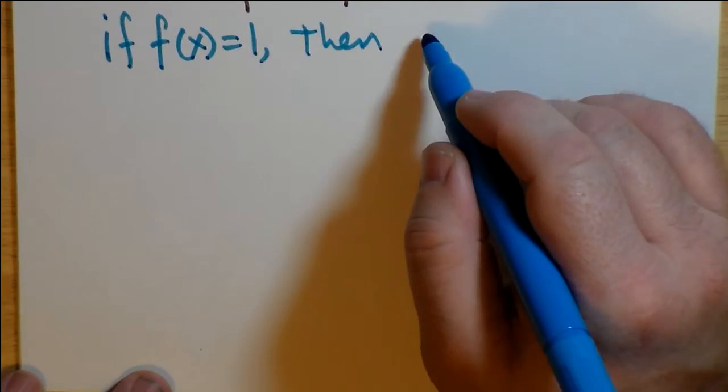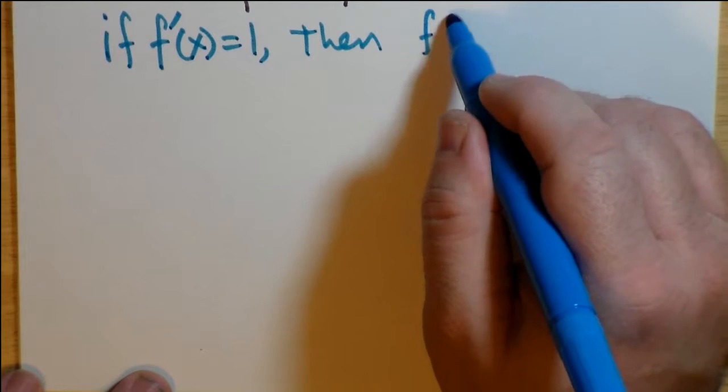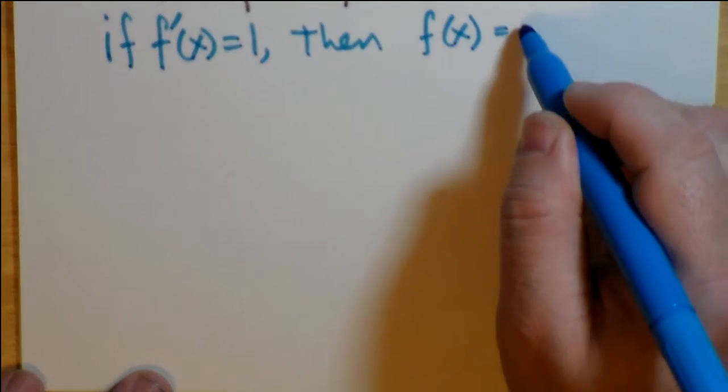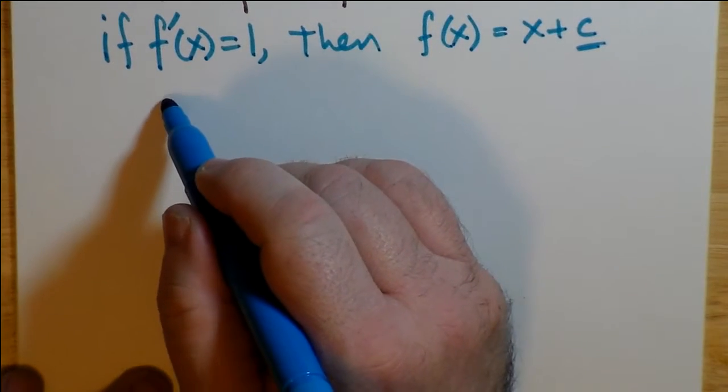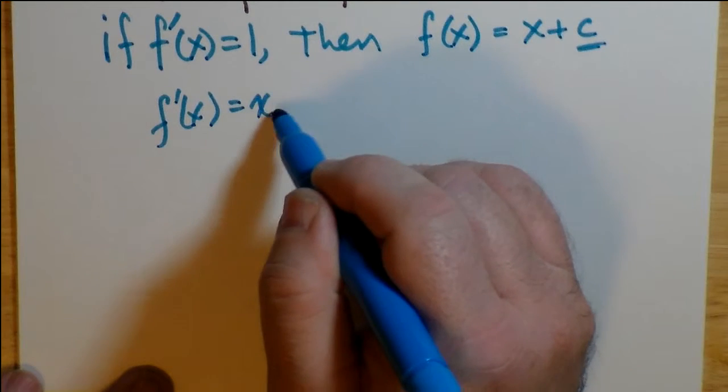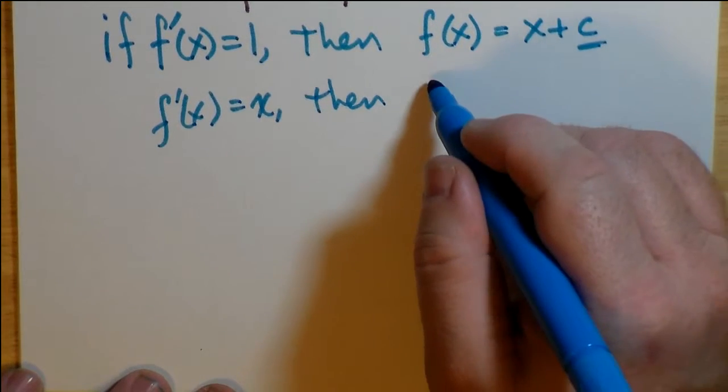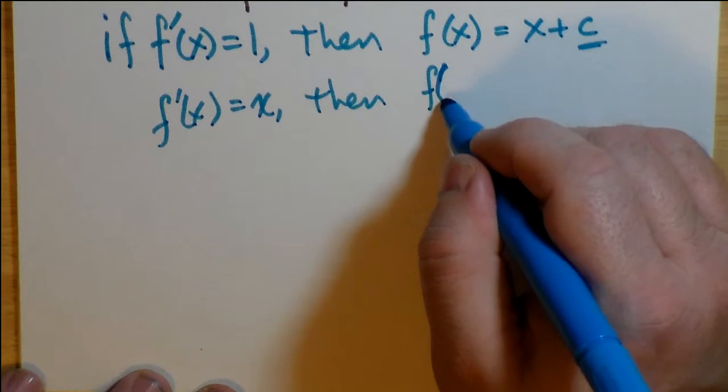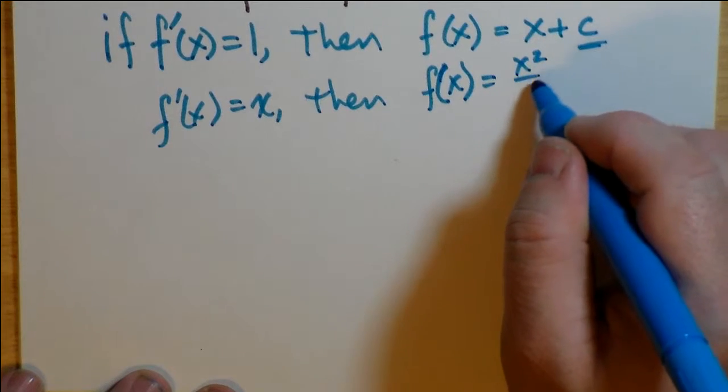For example, if f'(x) is 1, then by reversing the operation we think about what derivative gives us 1, and the answer would be x. Now, you could also add some constant, some number c, because if you thought of the derivative, the derivative of the constant is supposed to go to 0, and x plus any constant should still differentiate to 1.